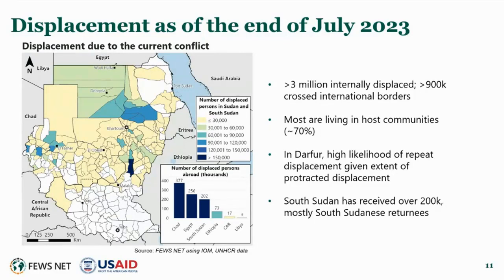Cross-border flows of refugees and returnees are also considerable, estimated at more than 900,000 by end of July. Chad and South Sudan have seen the most steady increases. Chad increased from about 180,000 at end of June to 330,000 at end of July, and South Sudan increased from about 140,000 at end of June to over 200,000 by end of July. In South Sudan, most newly arrived are South Sudanese returnees coming through the Renk border crossing, with thousands also arriving in northern bordering counties. Available data and key informant reports suggest substantial populations remain in these bordering areas, adding considerable strain on available humanitarian and local resources in already quite tense environments.